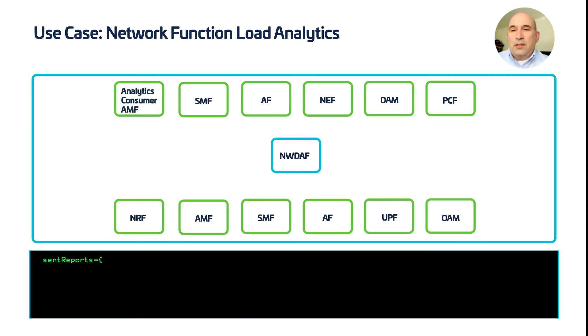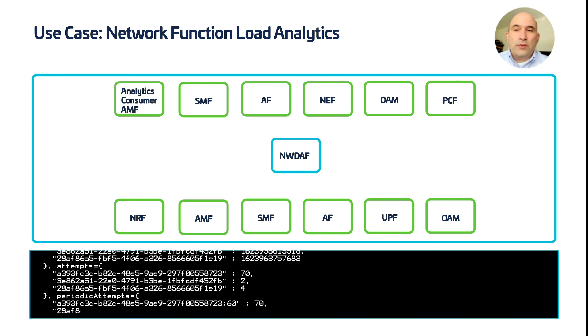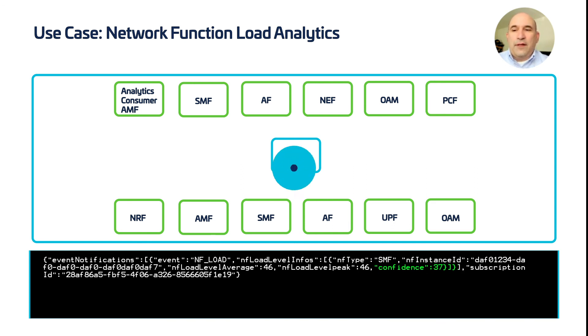We can see looking into the details inside the NWDAF server that responses are sent repeatedly. Here we have four notifications sent so far for this subscription. Like the immediate request previously shown, the notification for this subscription has average and peak load values for the requested period and a confidence value for this prediction subscription 28 Alpha Foxtrot for this SMF Delta Alpha Foxtrot.